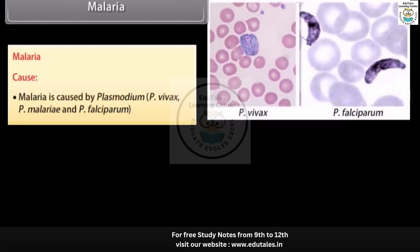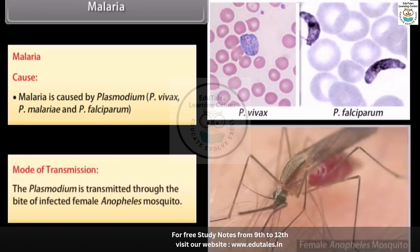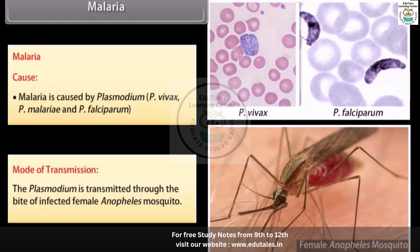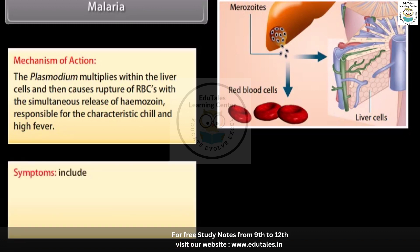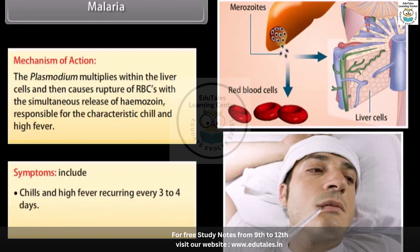Malaria is caused by Plasmodium — P. vivax, P. malariae, and P. falciparum. The plasmodium is transmitted through the bite of an infected female Anopheles mosquito. The plasmodium multiplies within the liver cells and then causes rupture of RBCs with the simultaneous release of haemozoin, responsible for the characteristic chills and high fever. Symptoms include chills and high fever recurring every 3 to 4 days, and fatigue.